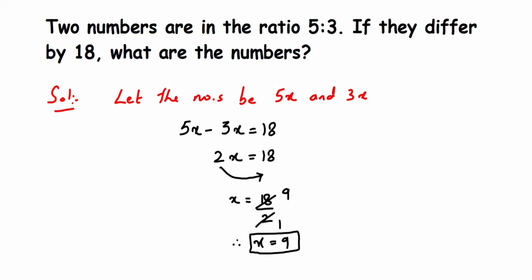Now we have to get the numbers. The numbers are 5x and 3x, so I have to substitute the value of x. Therefore the numbers are: 5x = 5 × 9 = 45, that's the first number. And the second number is 3x = 3 × 9 = 27.